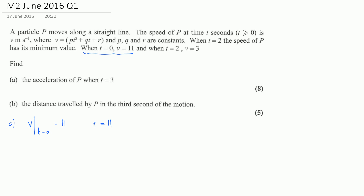The next condition is that when t equals 2, the speed of p has its minimum value. To find when v is at its minimum we need to differentiate and find dv/dt, and say that when we evaluate that at t equals 2 we get a minimum, so that gives us the differential equal to 0. If we differentiate the equation we get 2pt plus q, and evaluated at t equals 2 that gives us 0, so substituting in: 4p plus q is equal to 0.